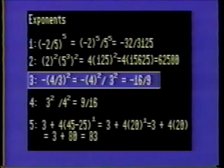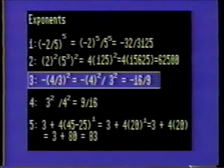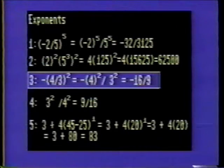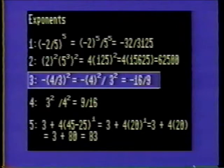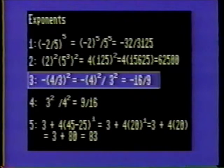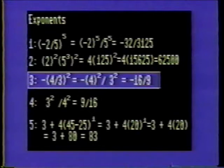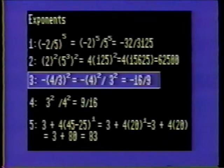Number 3. Since the negative sign is outside of the parenthesis, and there is an uneven number of them, the final result will be negative. Each component can be solved separately. 4 squared is 16, and 3 squared is 9. The solution is negative 16 divided by 9 because of the external negative sign.